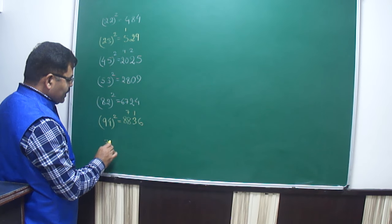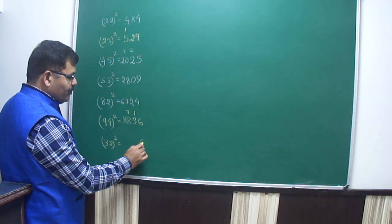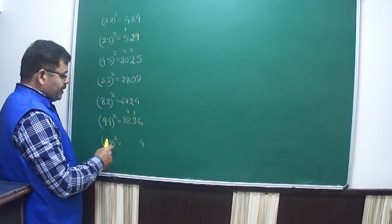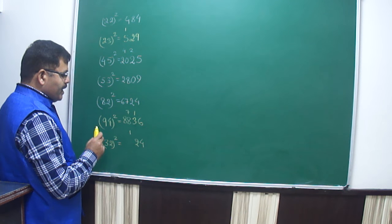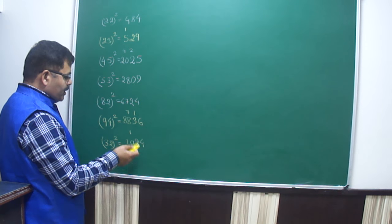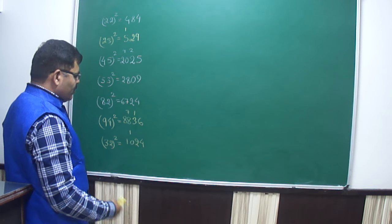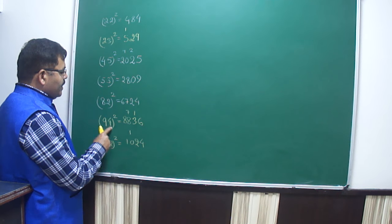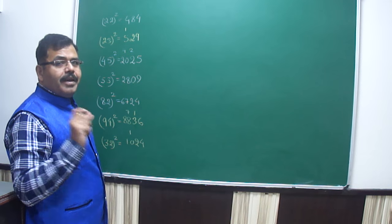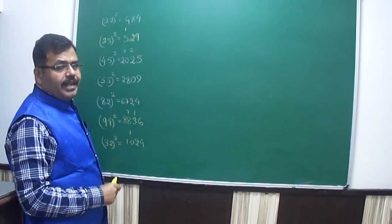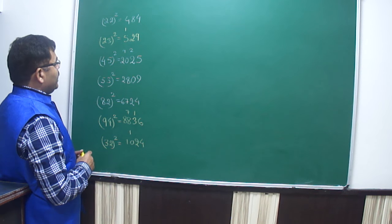Let me do one last example: 32 squared. 2 squared is 4. 3 into 2 is 6, double of 6 is 12 — carry 1. Now 3 squared is 9 plus 1 carried makes 10. So the answer is 1024. You can do this orally once you know the multiplication tables up to 9, because everywhere you multiply single digits — you only need the 9-times table at most.